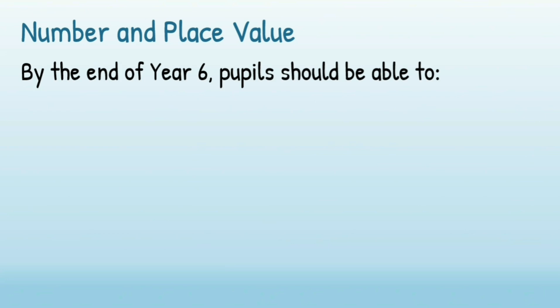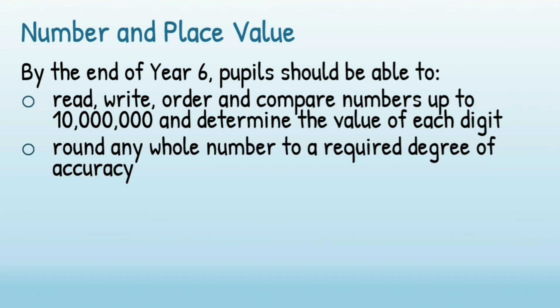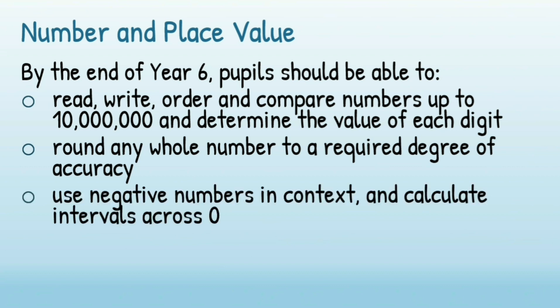Within number and place value, there are different objectives. There is read, write, order and compare numbers to 10 million and determine the value of each digit. There's also round any whole number to a required degree of accuracy.